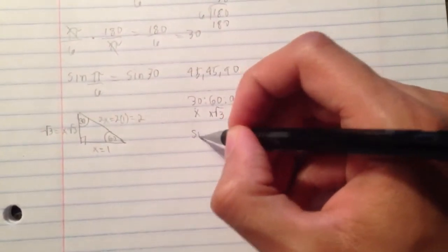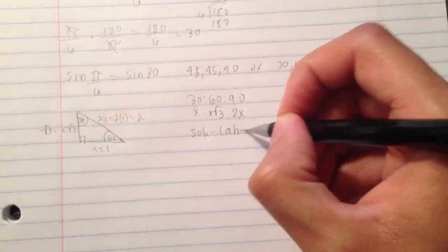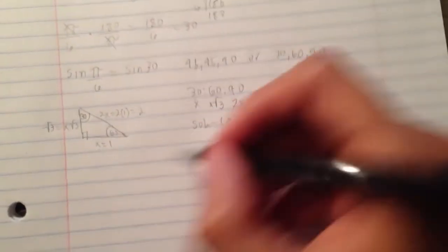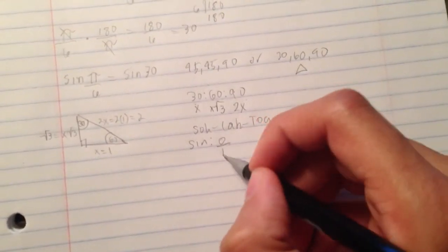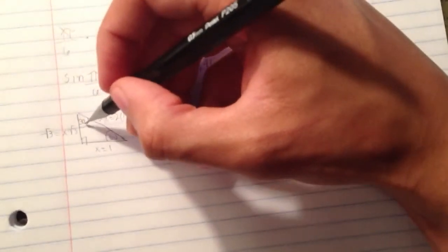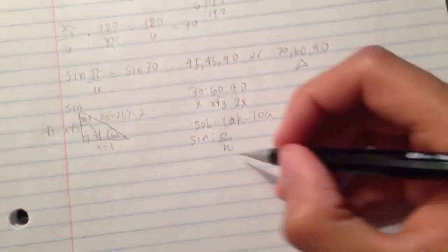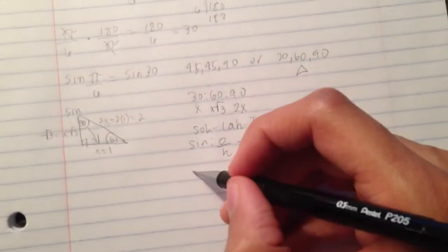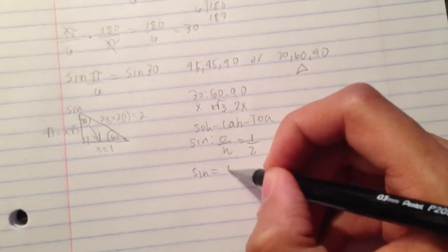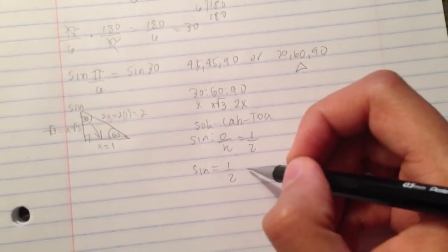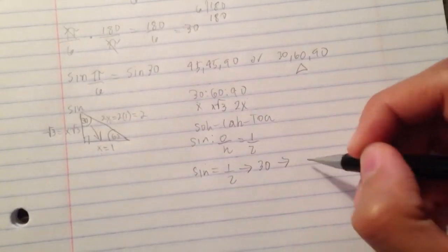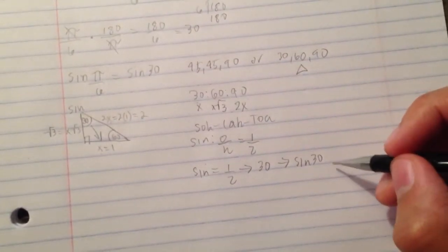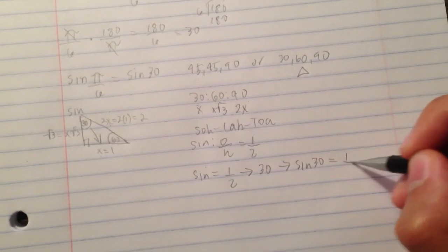Now, remembering SOHCAHTOA, you could think about sine. And sine is opposite over hypotenuse. If this is your sine, opposite is 1 and hypotenuse is 2. Therefore, you have sine equals to a half. Let's make that more specific as sine 30, which is sine 30 equals to a half.